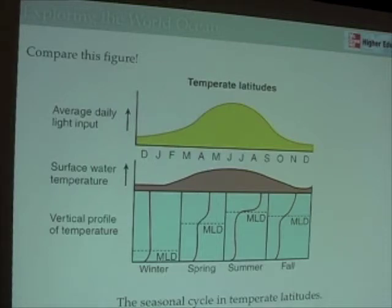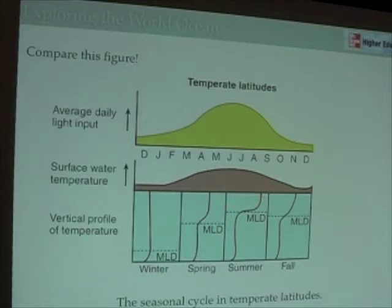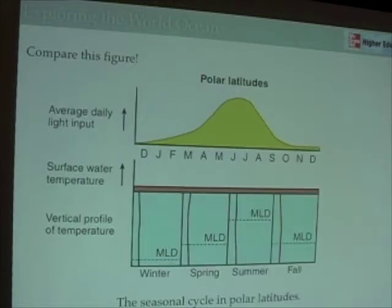This is temperate latitude — this is where we live — and we'll come back to this figure in Chapter 13, because it's this transition from the very deep mixed layer depth to the shallower mixed layer depths that actually drives productivity in the ocean. Now let's look at polar latitudes.